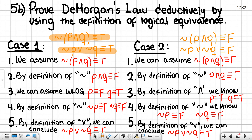In case number two, we will prove that if the negation of p and q is logically equivalent to false, then the negation of p or the negation of q is also false. First, we assume that the negation of p and q is logically equivalent to false. By definition of negation, p and q must be true. By definition of and, p must be equal to true and q must be equal to true. By definition of negation, the negation of p is false and the negation of q is also false. Lastly, by definition of or, we can conclude that the negation of p or the negation of q is true.